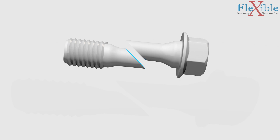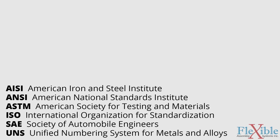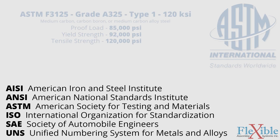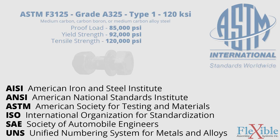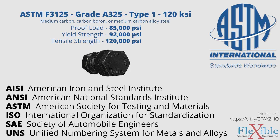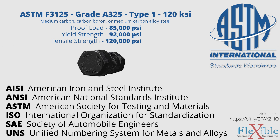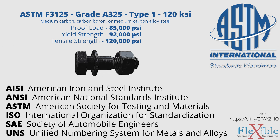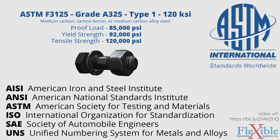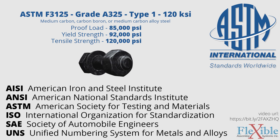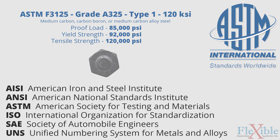Many classification codes are available for steel fasteners from a variety of societies and contain the specifications needed to attain a certain grade. For example, an ASTM F3125 is a heavy hex structural bolt made of alloy steel with a proof load of 85,000 psi, a yield strength of 92,000 psi, and a tensile strength of 120,000 psi.